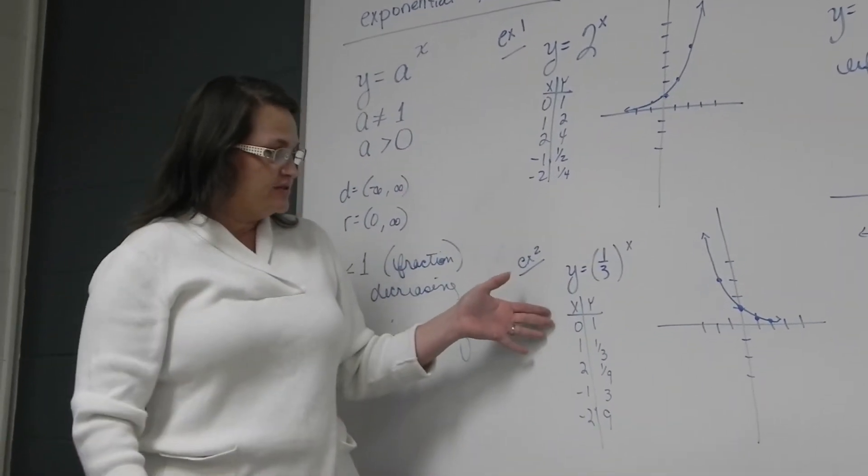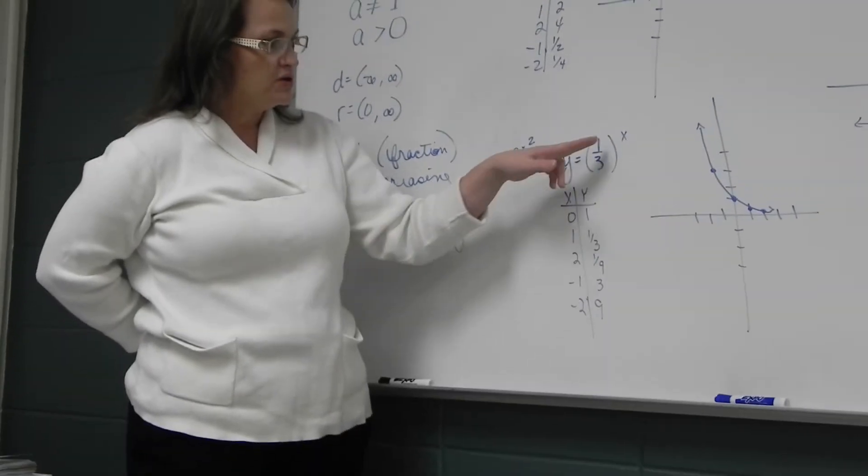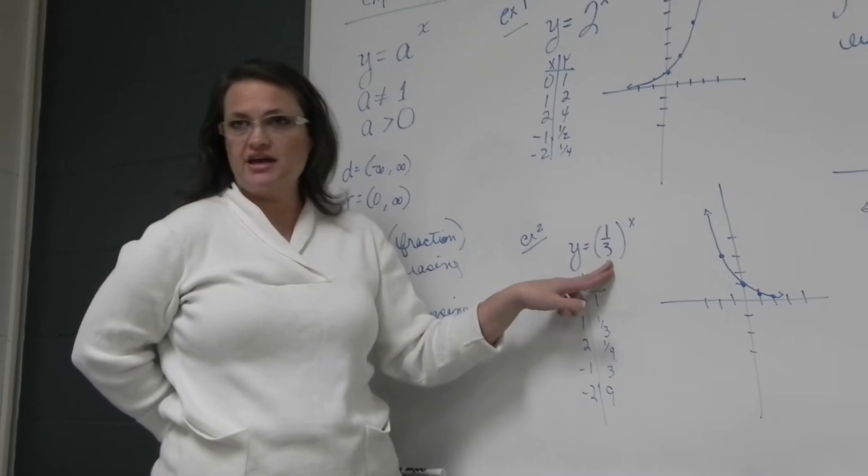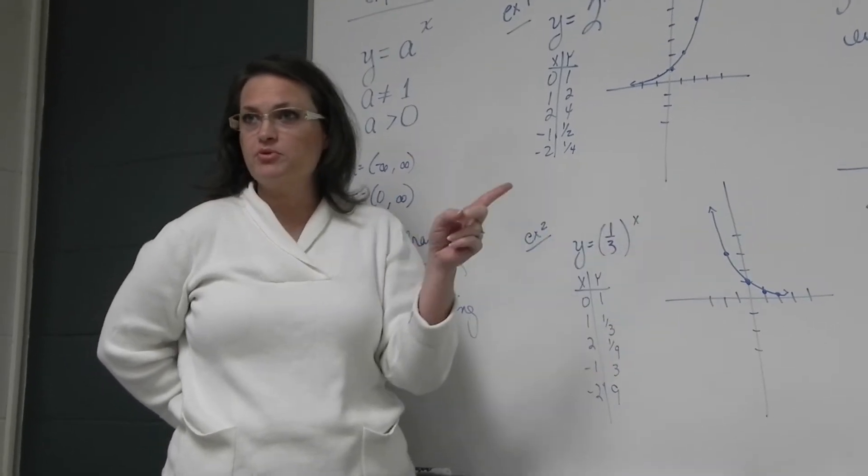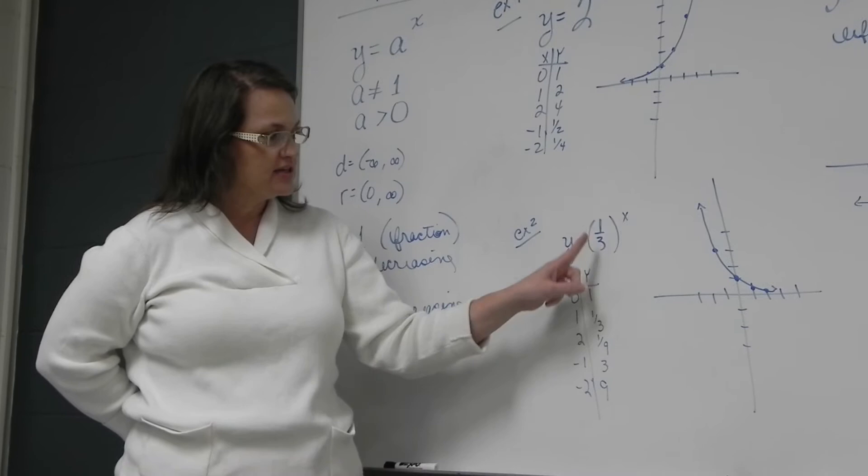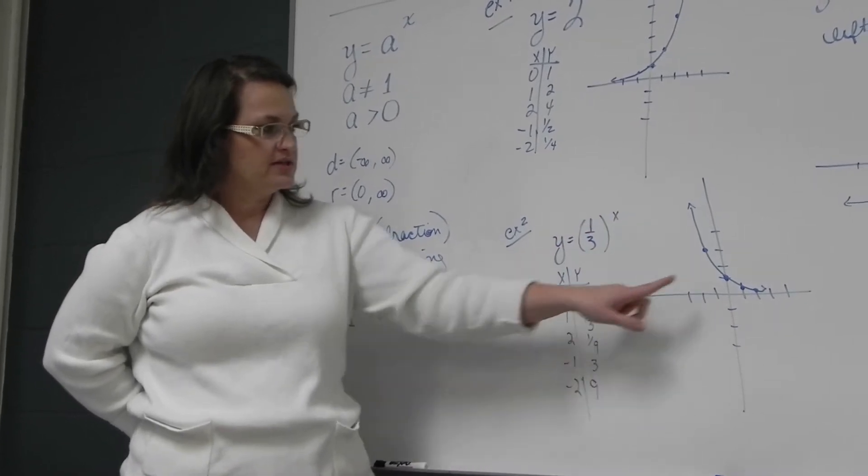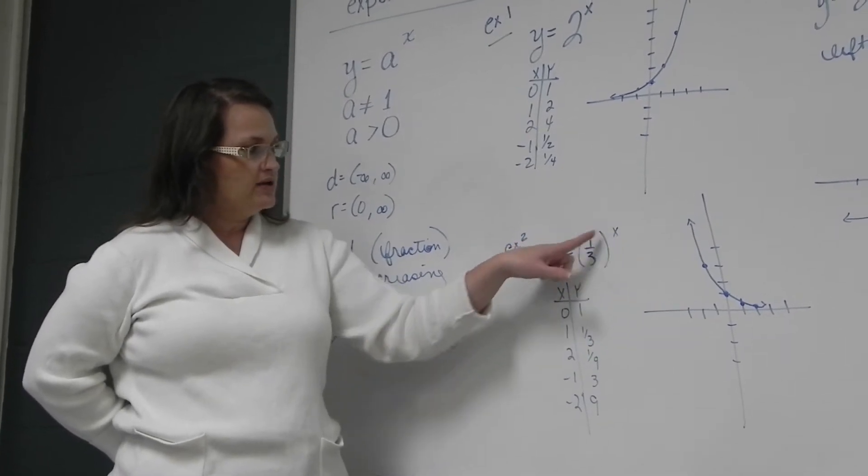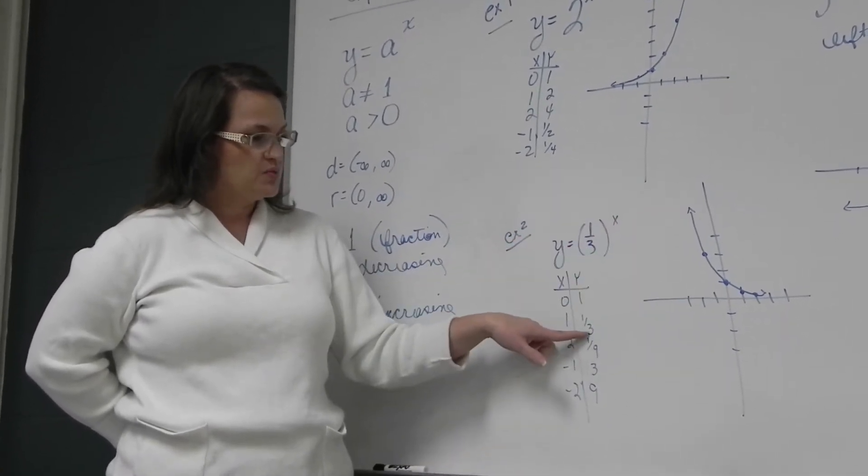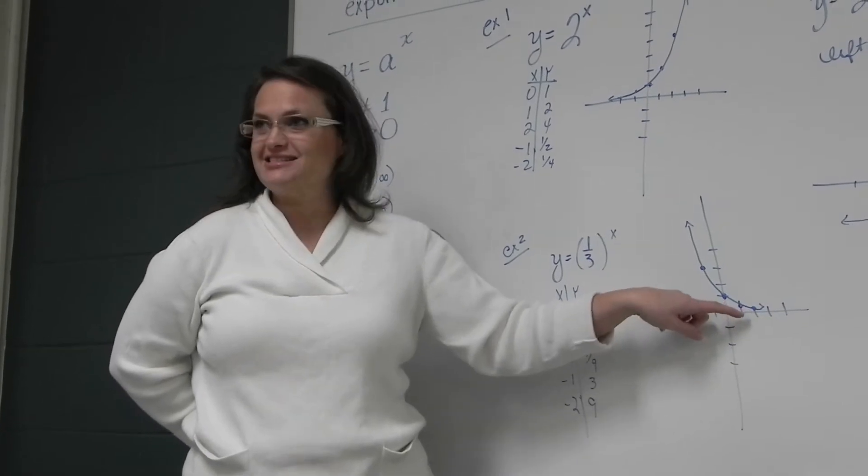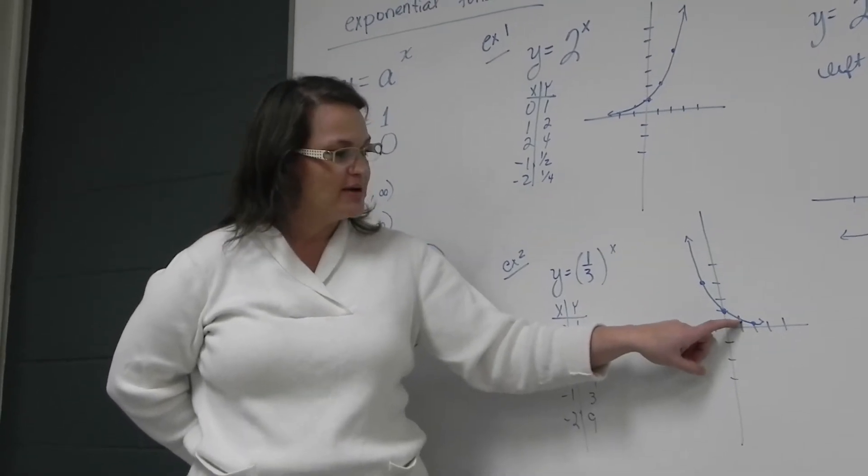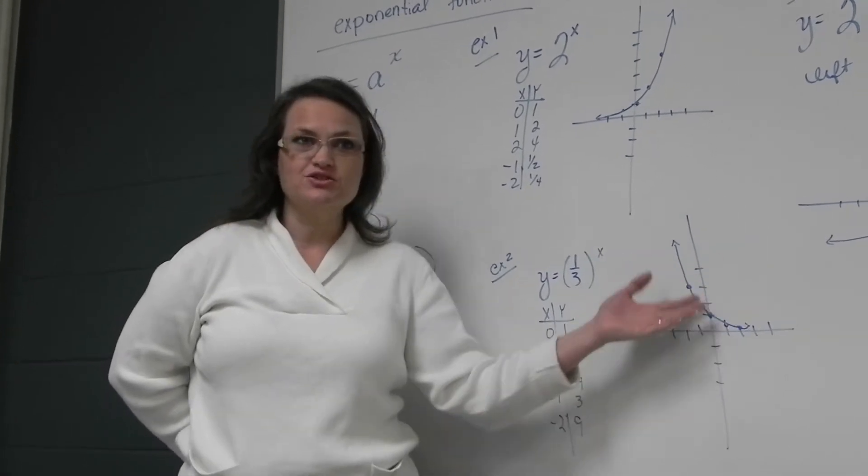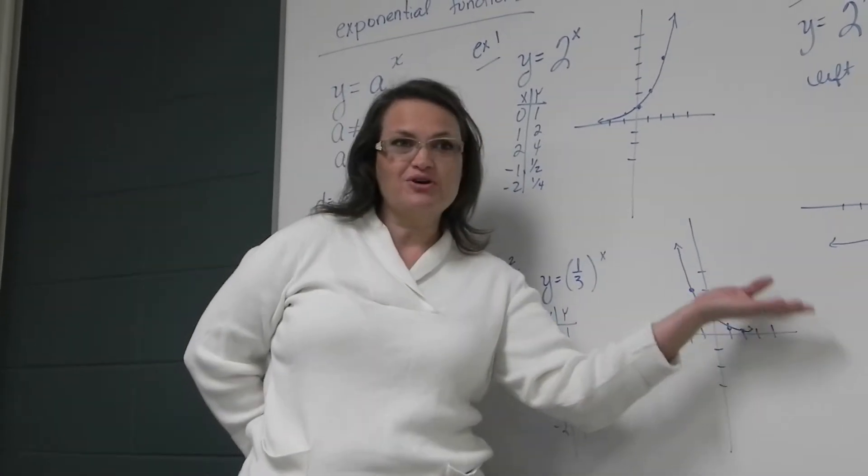So if it is a fraction, you still have the point (0,1) on the fraction ones. One third to the 0, anything, any base to the 0 power output is 1. So we plug in 0 for x, one third to the 0 is 1. So (0,1) again on this graph. When I plug in 1, one third to the first is one third. So over 1, this is the tiny side, right? When you go over 1, it's just up a third. Over 2, up a ninth. Over 3, up 1 27th. The story is that it gets closer on this side.